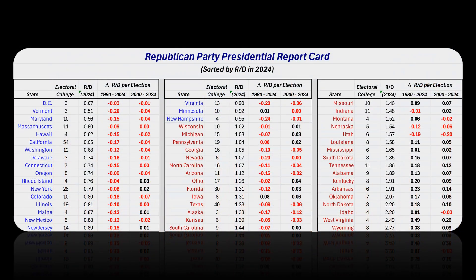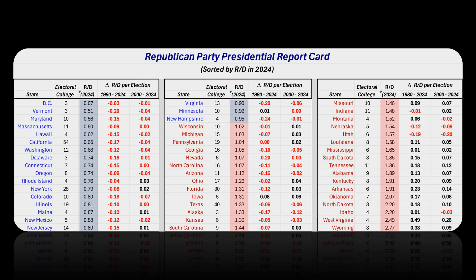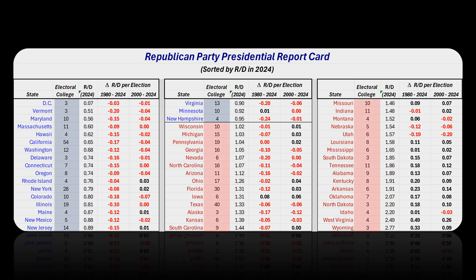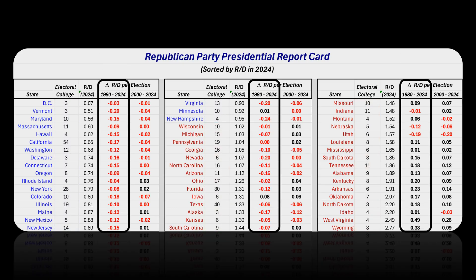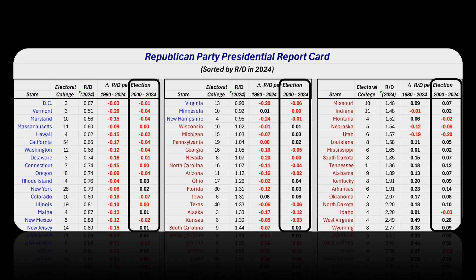This table summarizes the 2024 outcomes and the longer-term trends from the ratio graphs that I just showed you. I have labeled it the Republican Party Report Card because the numbers are presented from the perspective of the Republican Party. States where Kamala won in 2024 are shown in blue lettering, and states where Trump won are shown in red lettering. I have sorted the states from smallest to largest Republican to Democrat vote ratio, and I've also listed the number of electoral college votes awarded for each state. I have quantified the Republican to Democrat ratio trends in two ways: the longer-term trend including back to Reagan, and the more recent trend starting from 2000.